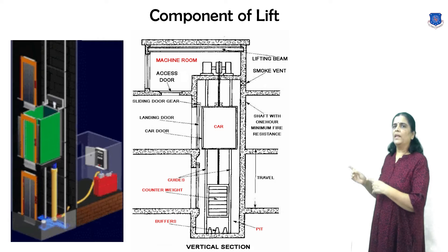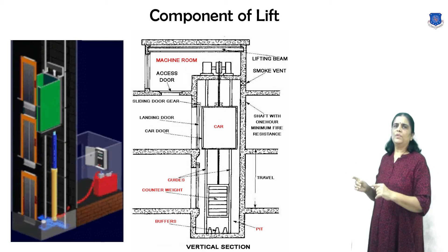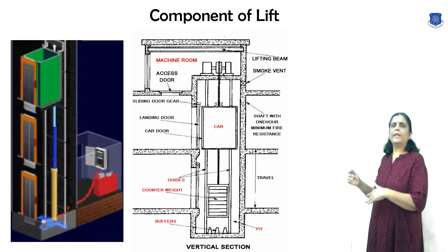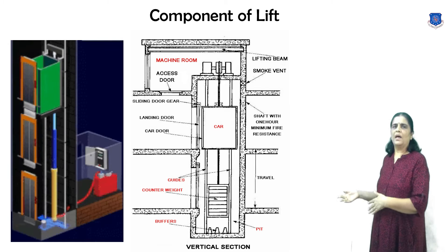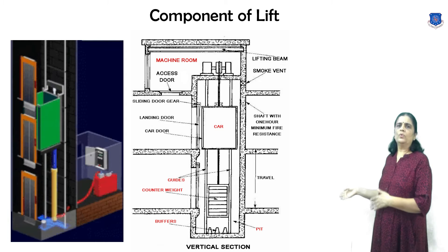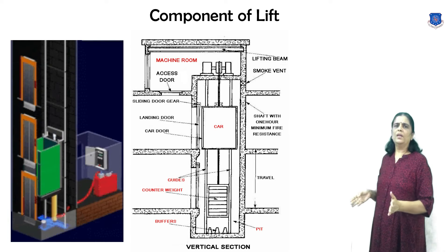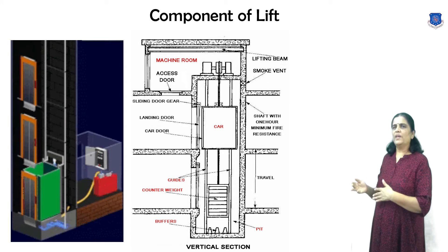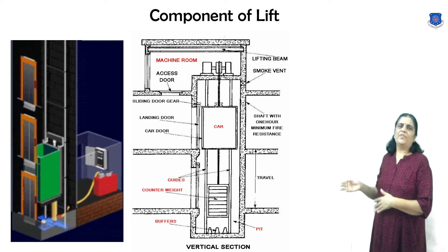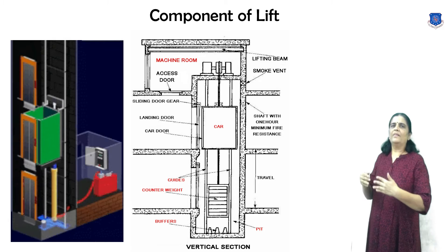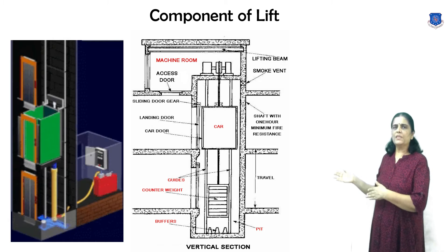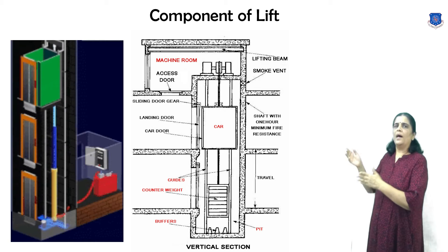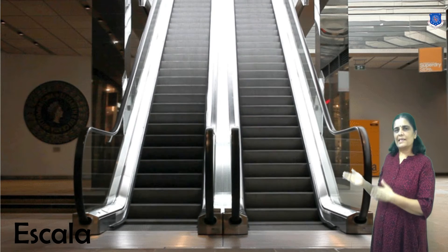Pit: the lowest part of an elevator shaft, extending from the lowest landing level down to the floor at the very bottom of the shaft. Shaft: a hoistway through which one or more elevator cars may travel. Counterweight or balance weight: a unit consisting of a steel weight that counterbalances the weight of the car and a portion of the load, and to which the suspension ropes are attached.